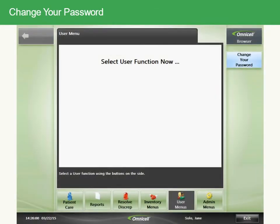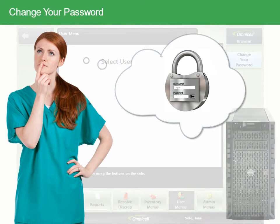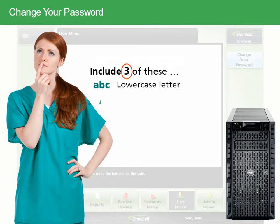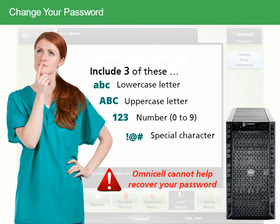You can change your password in User Menus by touching the User Menus button. Depending on the policies at your facility, you may be required to have a strong password. If enabled, strong passwords must contain three of the following four elements: a lowercase letter, an uppercase letter, a number from 0 to 9, and a special character such as a dollar sign. Please note that if you forget your password, you'll need to contact your system administrator. OmniCell cannot help you recover your password or create a new one.